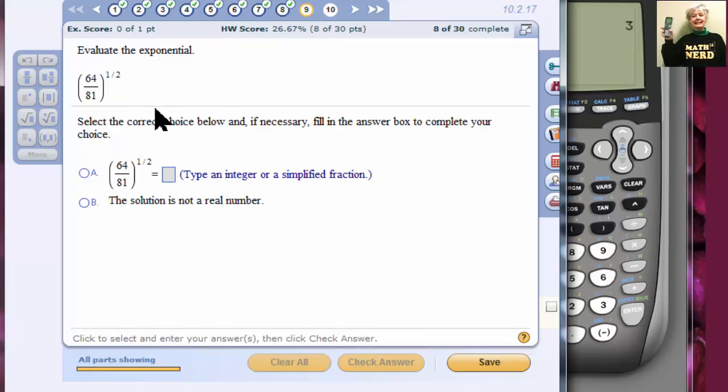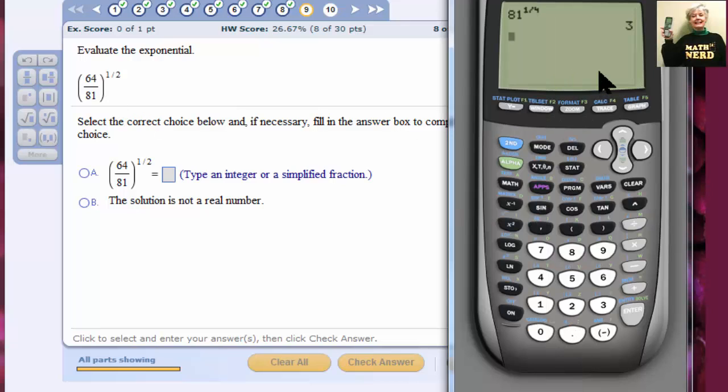Number 9. Oh! This is more interesting. Okay. Now, you can put this in your calculator the way it is here. Only because 64 and 81 are both perfect squares. We're taking 64 over 81 to the 1/2 power. Which means we're taking the square root of 64, which is 8. The square root of 81, which is 9. And so the answer is going to be 8 over 9. The fraction 8 ninths.